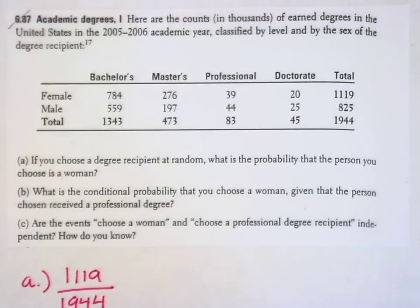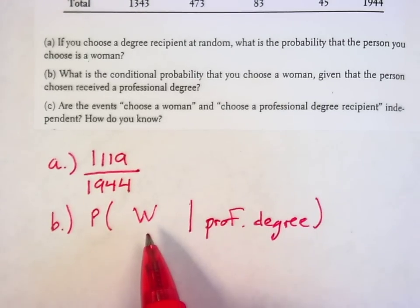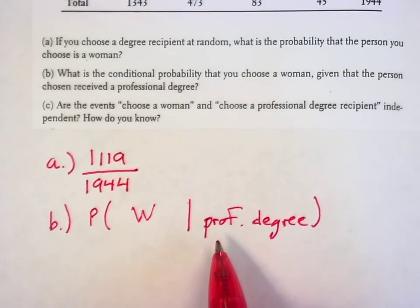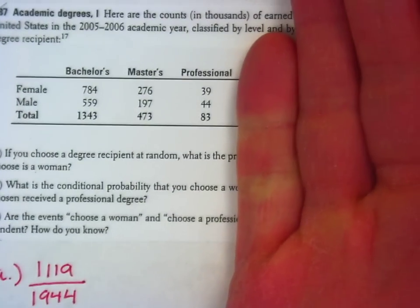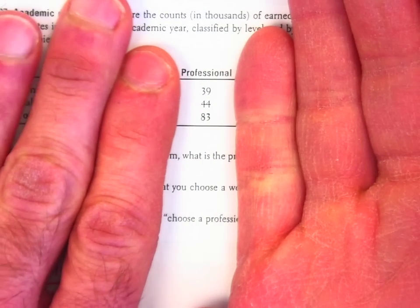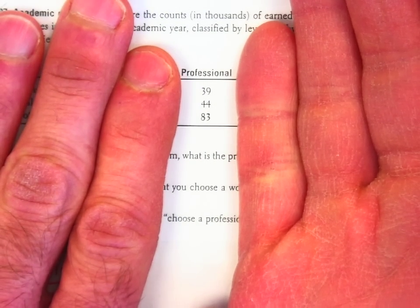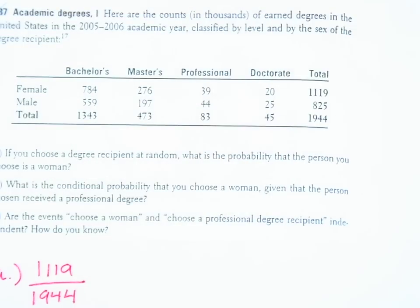So the probability that I'm interested in is the probability of a woman given that the degree was a professional degree to start with. So I'm only going to look at the professional degree column. In the professional degree column, if I cover up everything else, there were 39 women out of a total of 83. 39 out of 83.